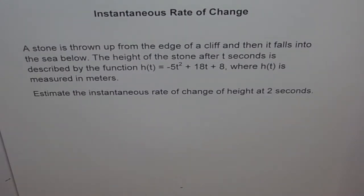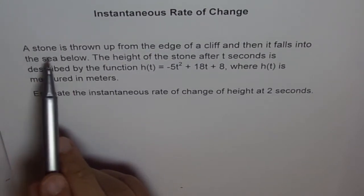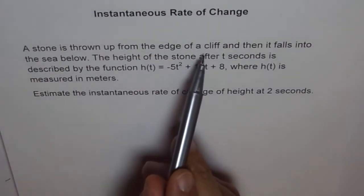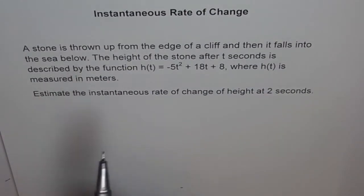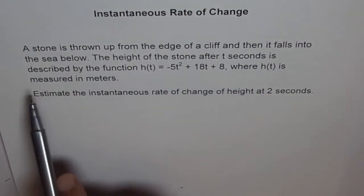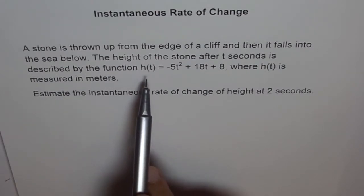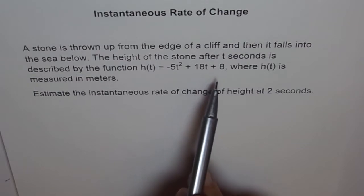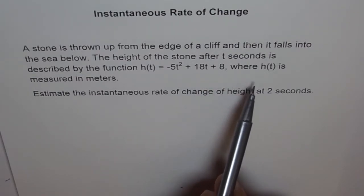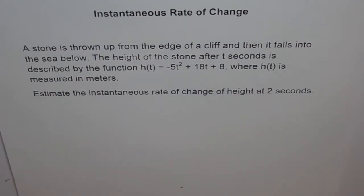The problem states that a stone is thrown up from the edge of a cliff and then it falls into the sea below. The height of the stone after t seconds is described by the function h(t) equals -5t² + 18t + 8, where h(t) is measured in meters.